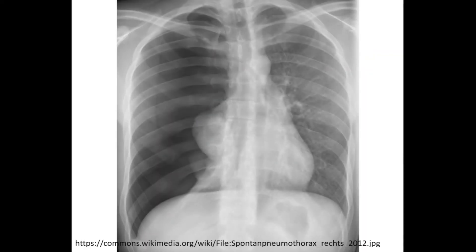Here's another example of a tension pneumothorax. We see lung markings going all the way out on the left, but nothing past a certain point on the right. This is a pretty severe tension pneumothorax that needs to be dealt with pretty fast.